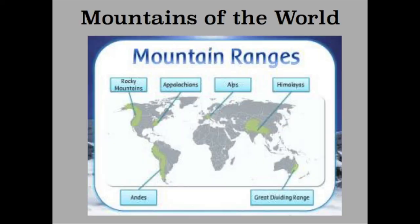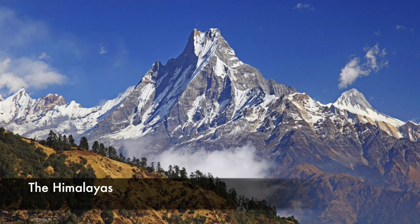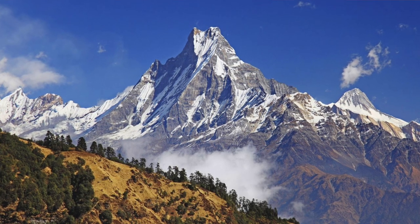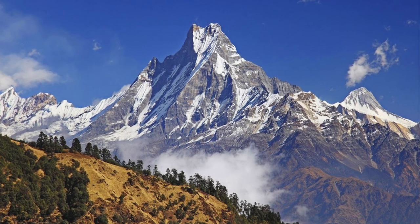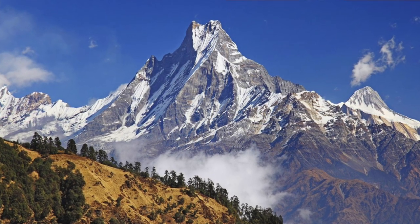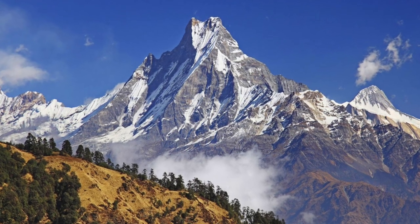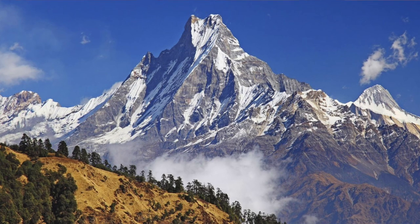Here are the mountain ranges of the world. We have the Rocky Mountains and the Appalachian Mountains in North America, the Andes in South America, the Alps in Europe, the Himalayas in Asia, and the Great Dividing Range in Australia. Here's a picture of the Himalaya mountains in Asia, and this picture really shows you how the very bottom of the mountain is so different from the very top. At the bottom you can see lots of grass and flowers, but as you get higher up, it gets snowier and looks colder. We are going to focus on plants and animals that live in the Himalayas.